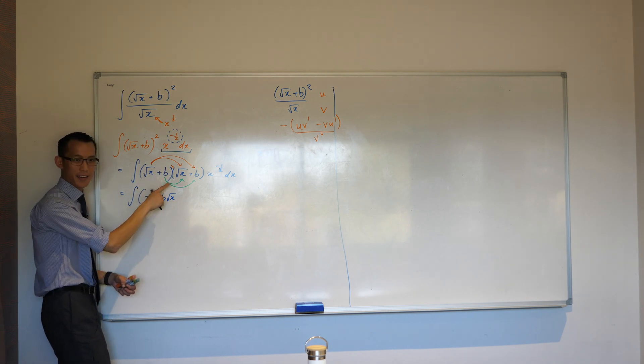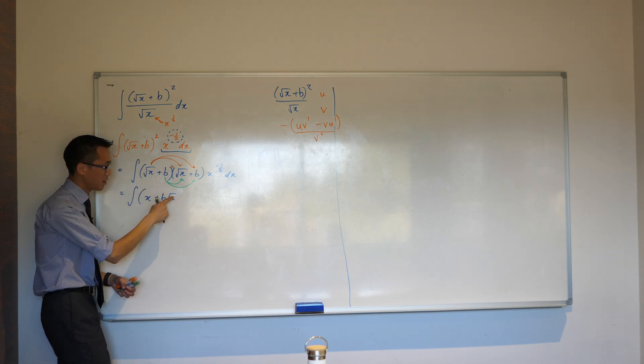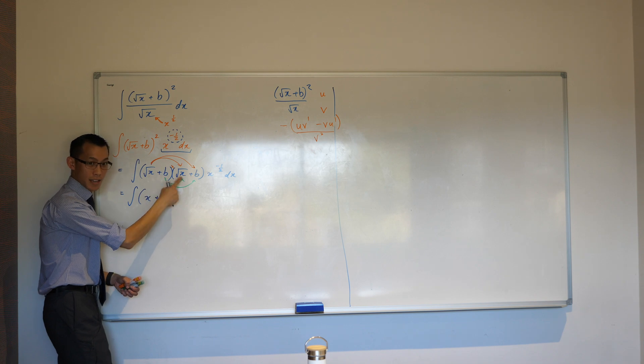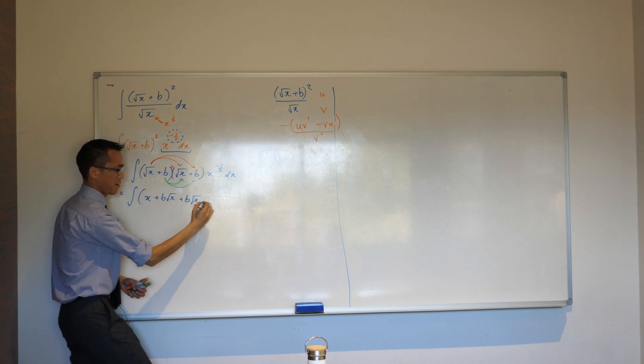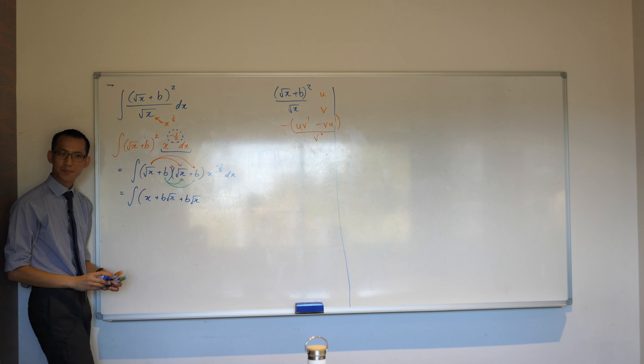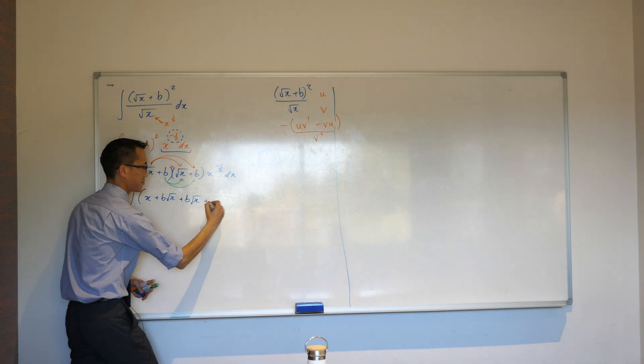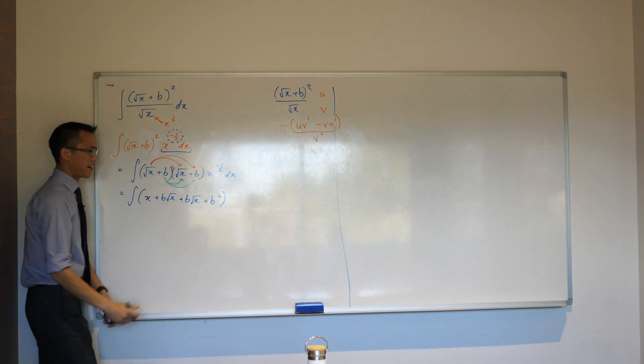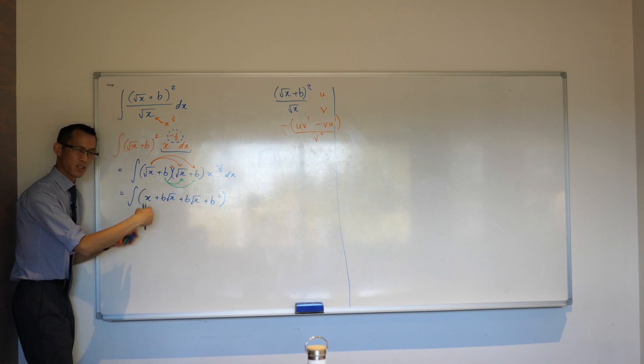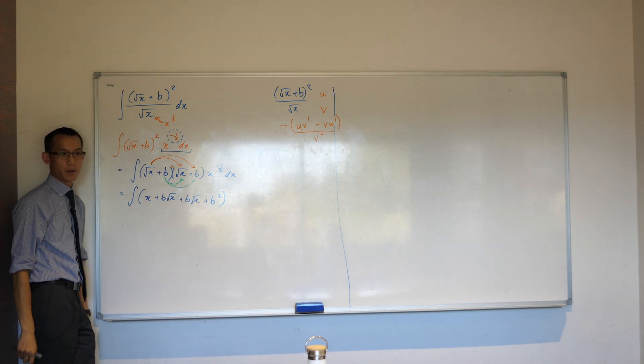I've done the orange ones, right? I'm up to now the green ones. So, I've got b times root x. So, that seems familiar. And then, can you tell me what's the last term? b squared. Very good. Now, this, even though it's longer, it's much easier to deal with, right? Because I can just go term by term and integrate one thing at a time, right?